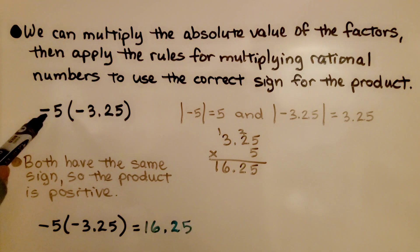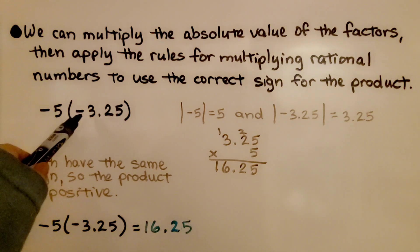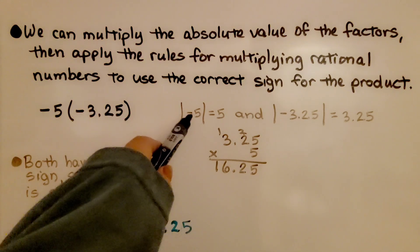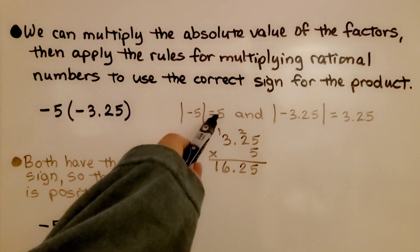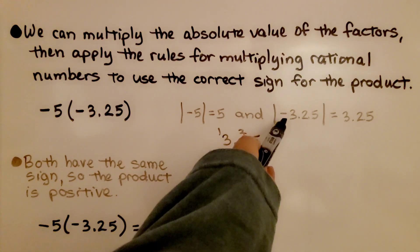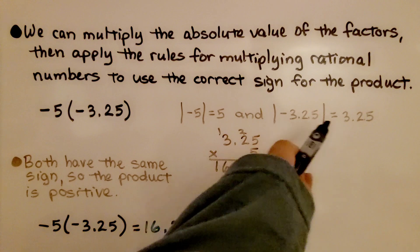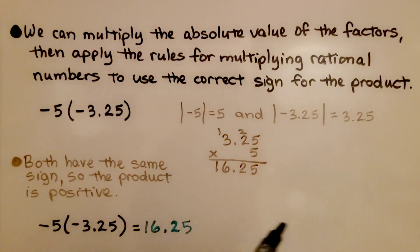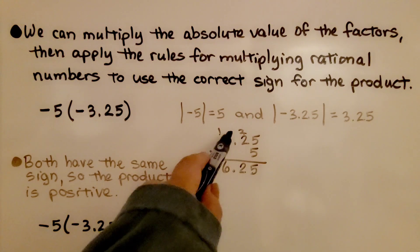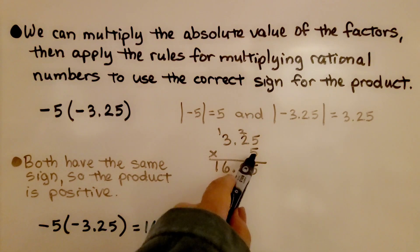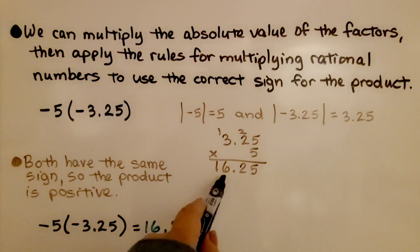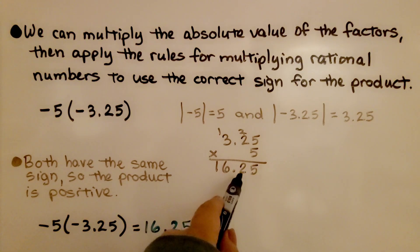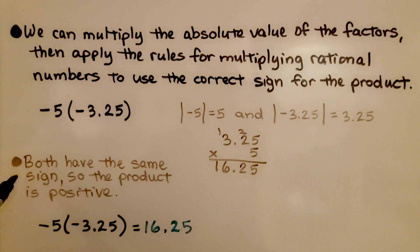We can multiply the absolute values of the factors and then apply the rules for multiplying rational numbers to get the correct sign. For negative 5 times negative 3 and 25 hundredths: the absolute value of negative 5 is 5, and the absolute value of negative 3 and 25 hundredths is 3 and 25 hundredths. We multiply 3.25 times 5 to get 16.25. Both factors have the same sign, so the product is positive 16 and 25 hundredths.